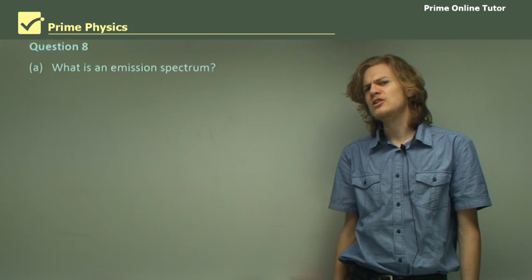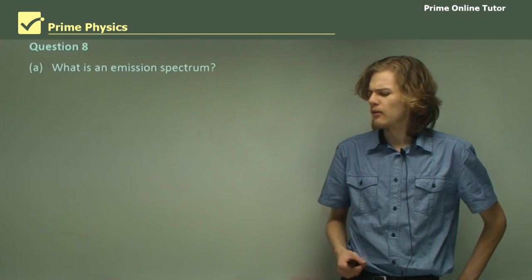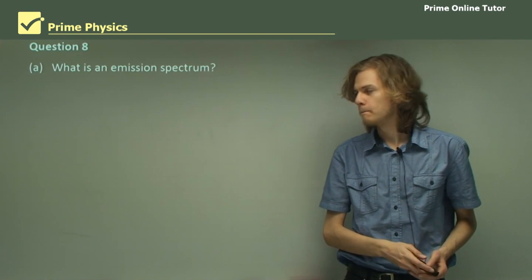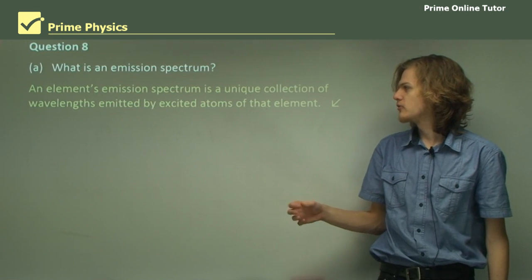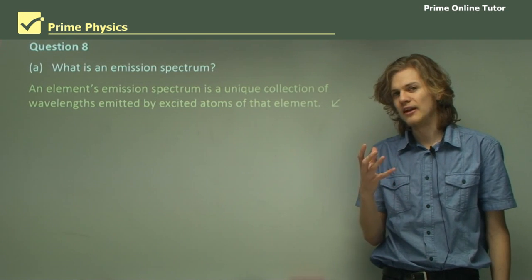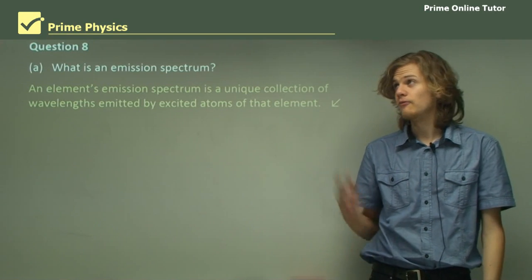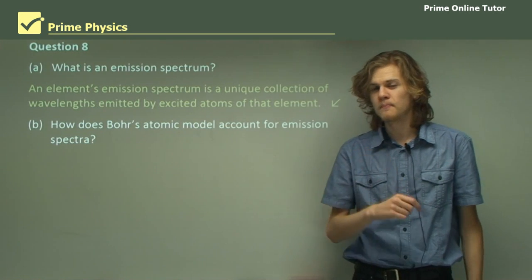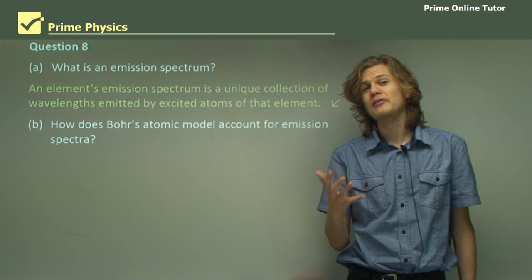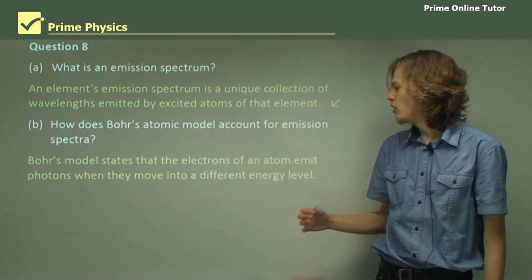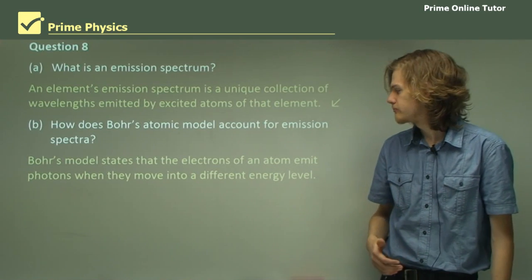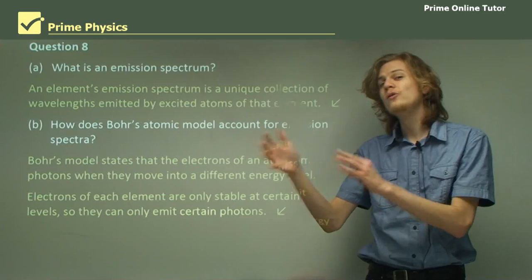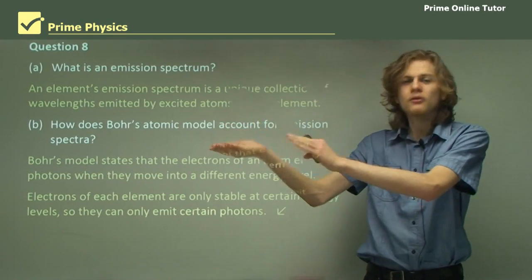Question eight. What is an emission spectrum? Now, an emission spectrum is colorful lines on a black background, right? So how do we get that from Bohr's model? Well, an element's emission spectrum is a unique collection of wavelengths emitted by excited atoms of that element. We excite the atoms, they glow. That's how we get fluorescent lighting. So how does Bohr's atomic model account for emission spectra? And here's the important question. So the answer here has to do with the energy levels of the electrons. Bohr's model states that the electrons of an atom emit photons when they move between energy levels. So electrons of each element are only stable at certain energy levels. And this is why they can only emit certain photons. Because they go from one certain energy level to a different certain energy level.